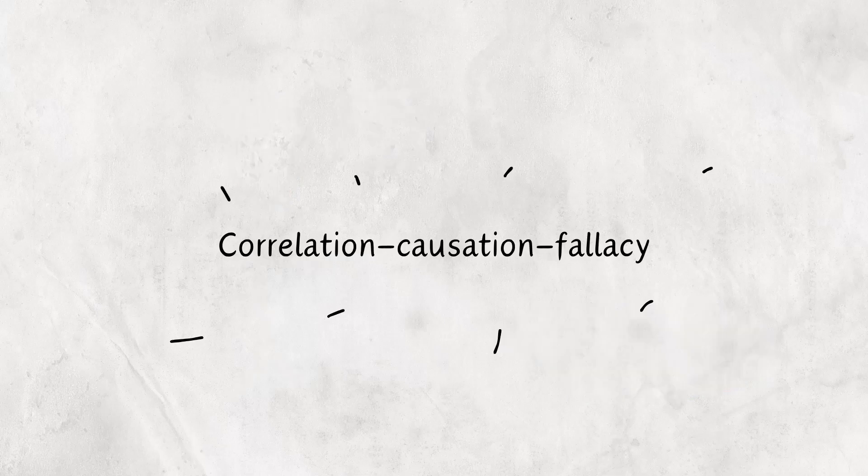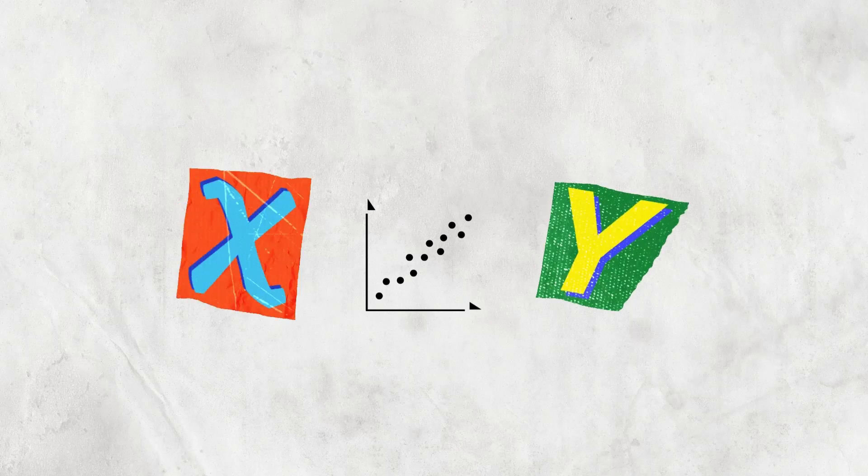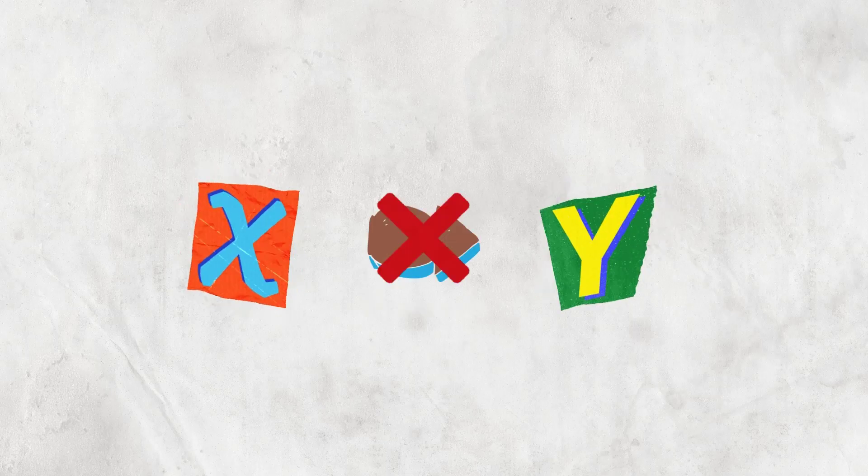This is the basis of the correlation causation fallacy, and it's a very common way that our psychology tricks us. Just because two factors are correlated, does not mean that one of them is causing the other.